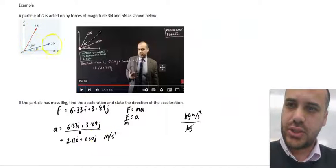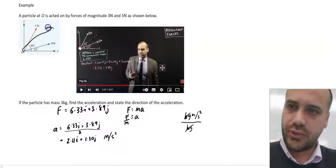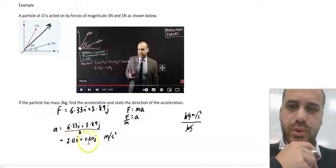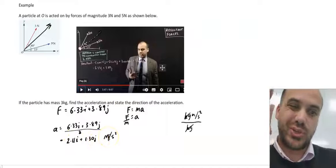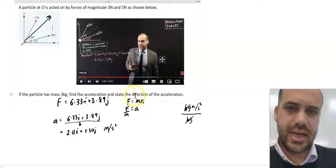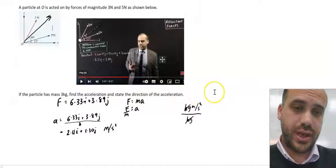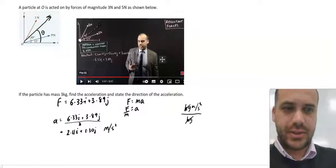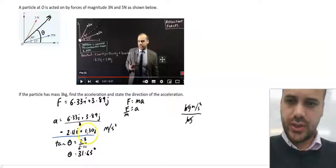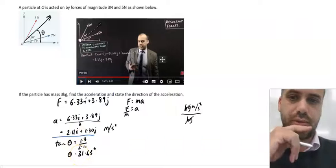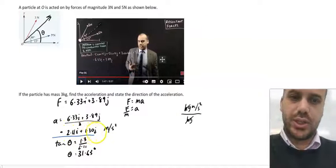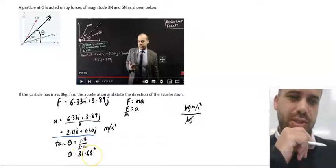All right, so the particle was acted on by two forces. It resulted in a single force, and we get this acceleration, 2.11i plus 1.3j meters per second squared. Now, it says state the direction of the acceleration. So we can find that easily enough just by figuring out whatever that angle is. That's just going to be tan theta, the j component over the i component, and theta is going to be equal to 31.63.